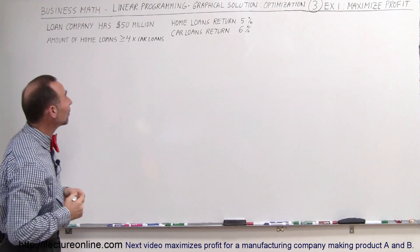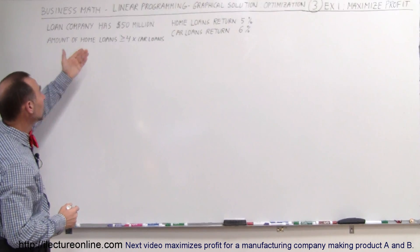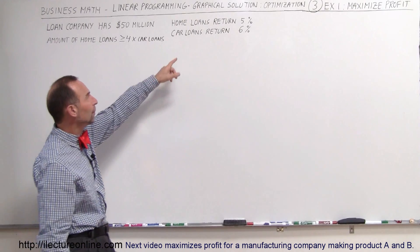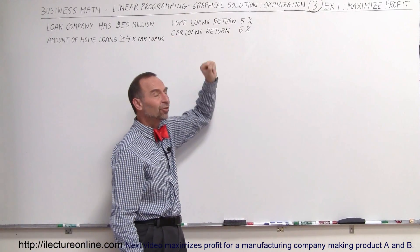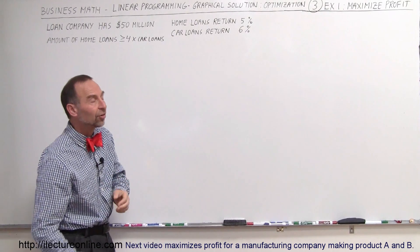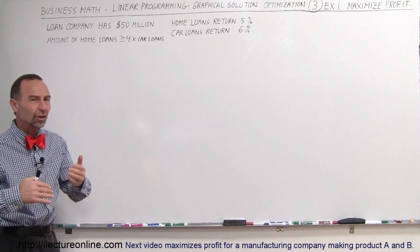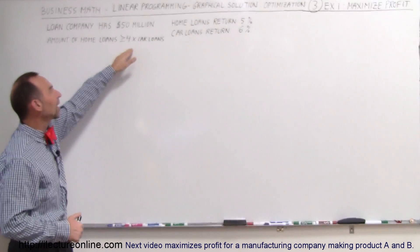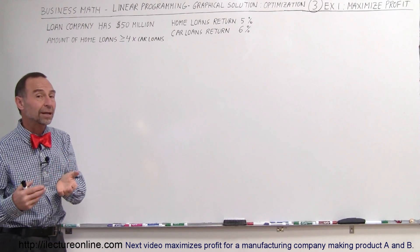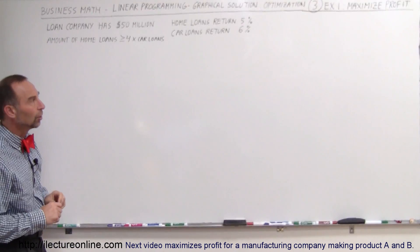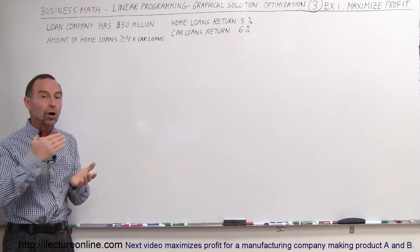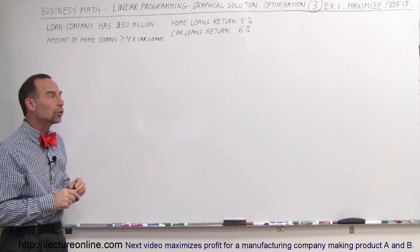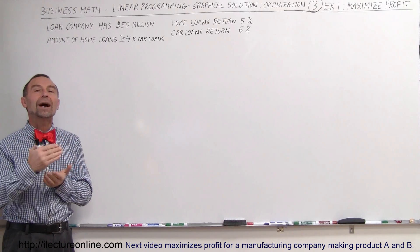Here's a good example. Let's say we have a company — a loan company — who has $50 million to loan out. They've determined that with home loans they get about a 5% return, and with car loans they get about a 6% return. Because of the mix they want to achieve, they say they want the home loans to account for at least four times the amount of the car loans. It could be bigger, but not smaller. Based upon that, what kind of arrangements for car loans and home loans do they need to set up in their portfolio in order to maximize the profits?